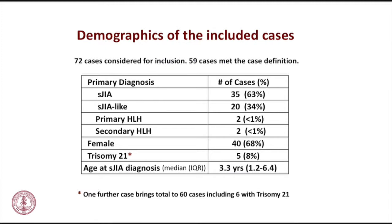These are really young kids, with a wide range. We have children diagnosed at 17 — I just got on the plane coming here and received a call about a new 17-year-old with ILD and SJIA. And we have very young children, some beginning at five or six months of age who are SJIA-like.